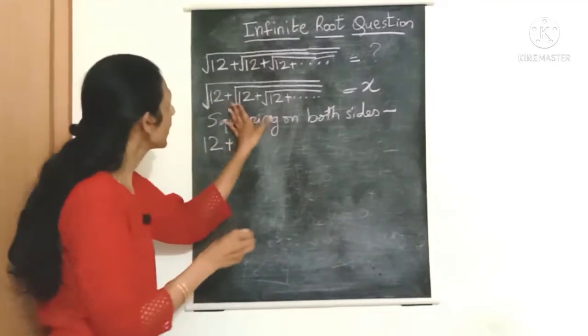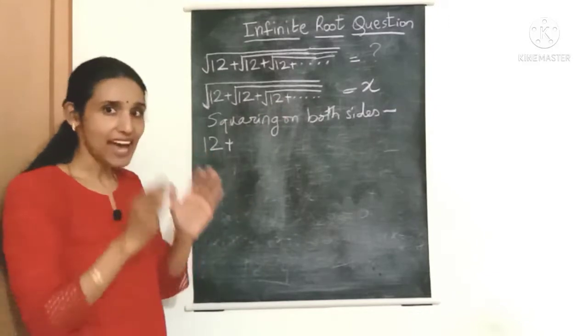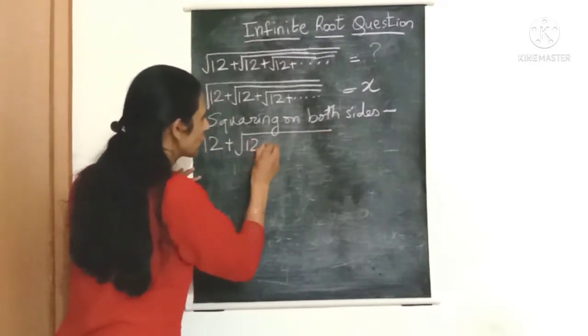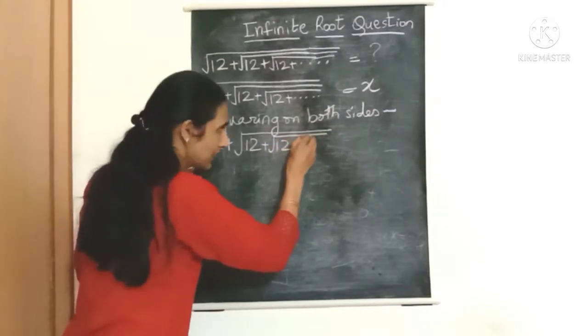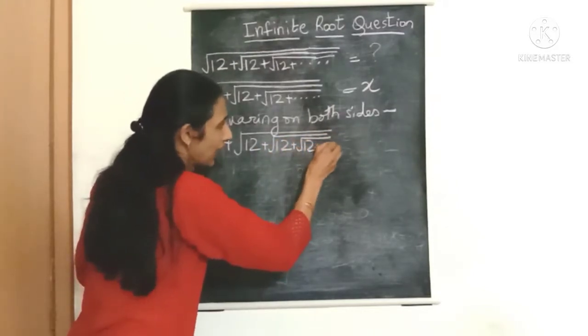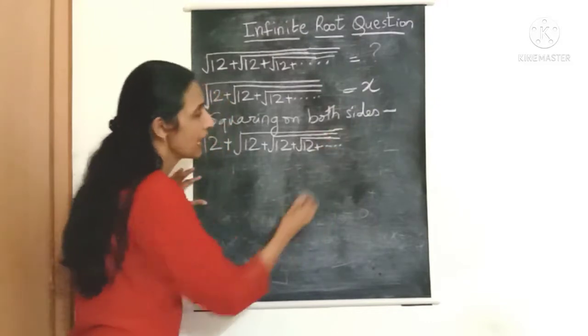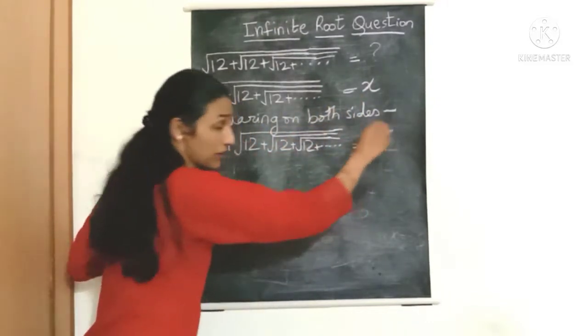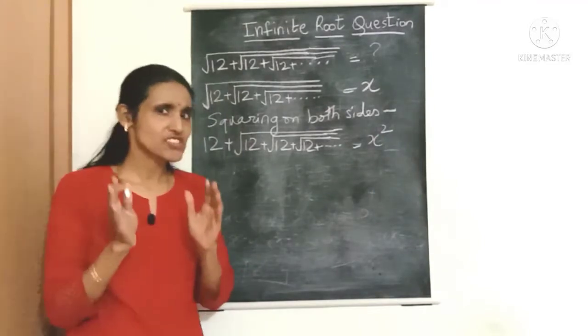This outermost square root sign just vanishes away and we are left with 12 plus, now this entire thing remains as it is. So let's just copy it down as it is: square root of 12 plus square root of 12 plus, let's just write one more term here, anyway it goes on till infinity. And what happens to the right hand side? This becomes x square.